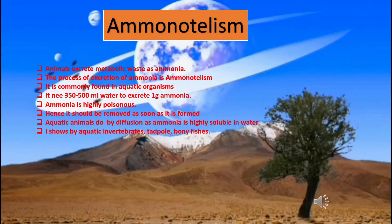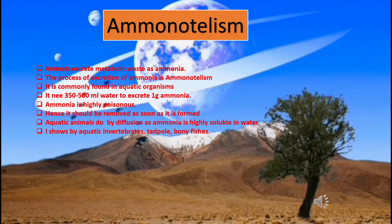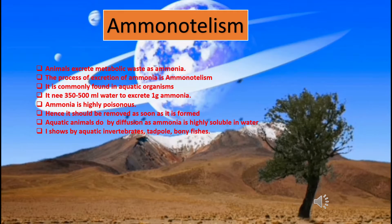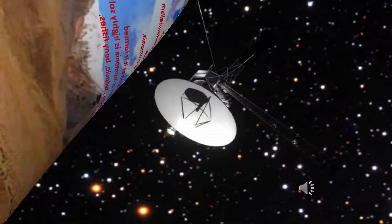Animals that excrete metabolic waste as ammonia are called ammonotelic animals, and the process is called ammonotelism. It is commonly found in aquatic organisms. It needs 350 to 500 milliliters of water to excrete 1 gram of ammonia. Ammonia is highly poisonous and highly soluble in water, hence it should be removed as soon as it is formed. Aquatic animals do this by diffusion. It is shown by aquatic invertebrates, tadpoles, bony fishes, etc.